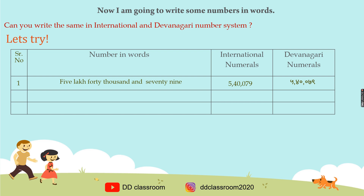Let's move to the next example. Serial number 2 is 8 lakh 65 thousand and 3. Do you want to try this in the international system? The answer is 8, 6, 5, 0, 0, 0, 3 — that is 865003. Let's try it in the Devanagri system as well. My answer is 865003. I hope yours is the same.